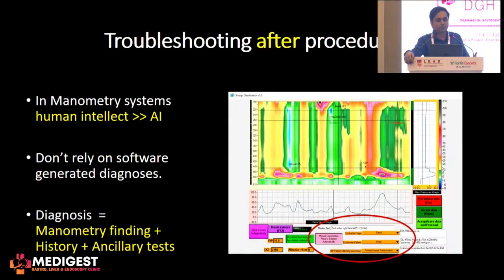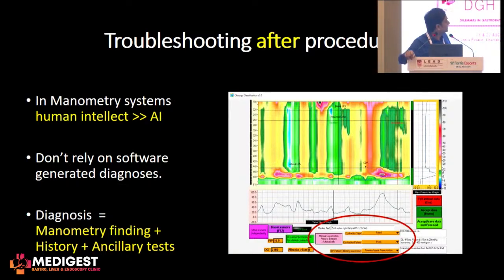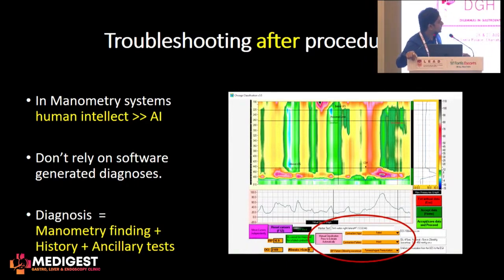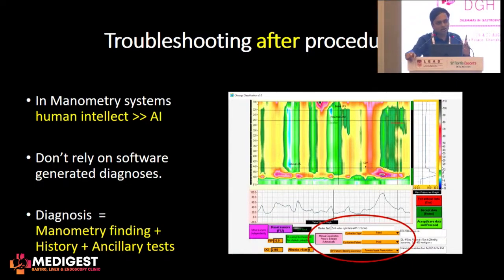Once you have done the procedure and are analyzing the graphs, one very important thing is to make sure you are analyzing it yourself. Unfortunately, the AI in most manometry systems is not very good — your human intellect must always be applied. Don't rely solely on what the machine tells you. You always have the option of manually classifying the graphs you are seeing. The final diagnosis is always the manometry findings integrated with the patient's history and any ancillary tests available to you.